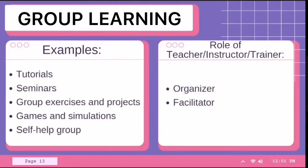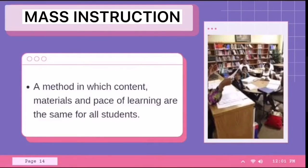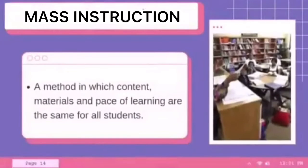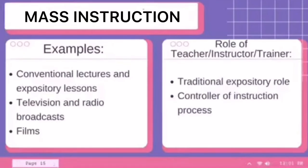For the role of the teacher in group learning, they can be organizer and facilitator. Lastly, we have mass instruction. This is the opposite of individualized instruction — a method in which content, materials, and pace of learning are the same for all students in a classroom or course. Examples include conventional lectures and expository lessons, television and radio broadcasts, and films. The role of the teacher is the traditional expository role and controller of the instruction process.